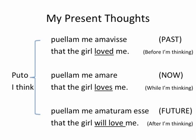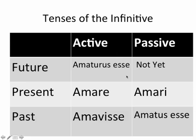When you're thinking in the present, these should look straightforward to you and just be a review. I think that the girl loved me — it's happening before you were thinking. I think that the girl loves me — it's happening now at the same time as you're thinking it. And then I think that the girl will love me — it's happening in the future after you're thinking. This is a quick review of the infinitives; you obviously need to know how to form and translate these.